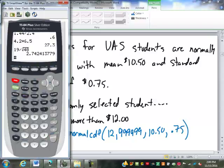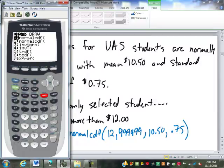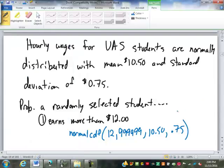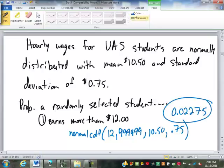So the distributions normalcdf, 12, 99999, 10.5, 0.75. That spits out .02275.